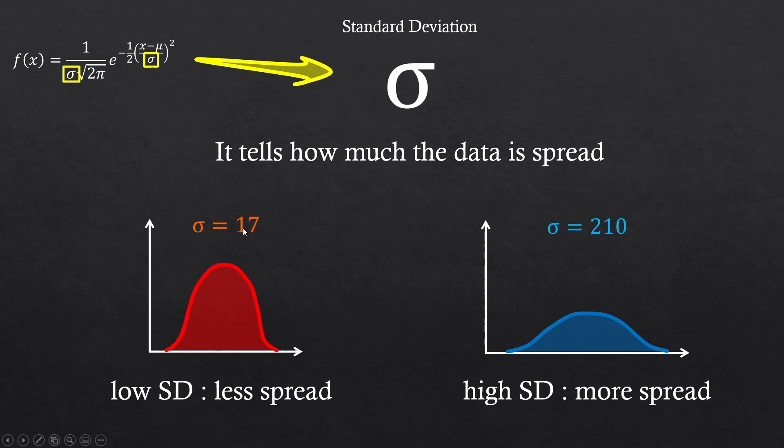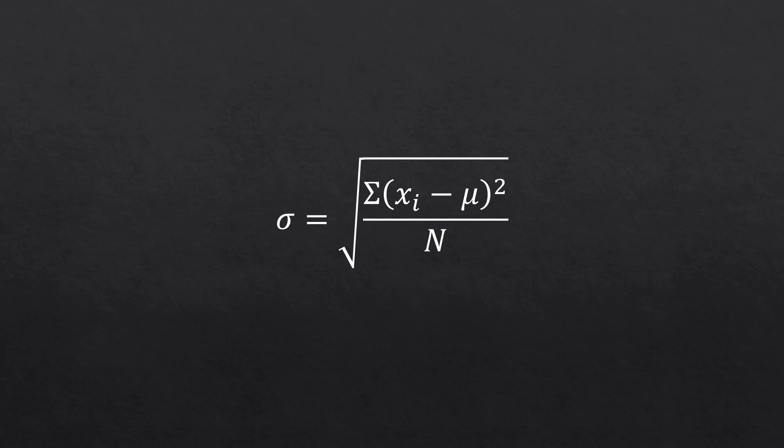So how do we obtain these numbers that tell the spreadness of the data? We obtain standard deviation value using this expression. As I said, this sigma is a standard deviation. And that is another Greek alphabet, mu, which represents the average value of the data. We'll get back to this expression later.